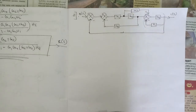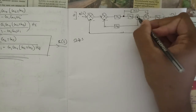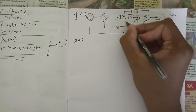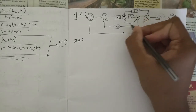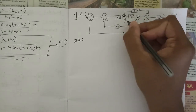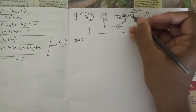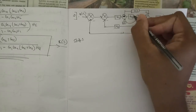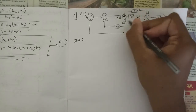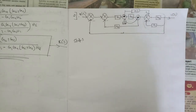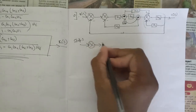Now let's solve this. Step one: I am going to shift this takeoff point to the left-hand side of the block. When we shift a takeoff point to the left-hand side of a block, we need to add one block — we multiply by g2 (the block we are shifting past). So I am doing that right now.